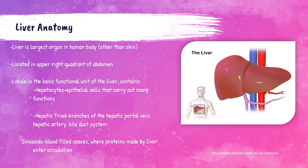The lobule contains hepatocytes, which are epithelial cells in the liver that carry out many functions. The lobule also contains the hepatic triad, which are the branches of the hepatic portal vein, hepatic artery, and the bile duct system. And lastly, it also has sinusoids, which are spaces in the liver filled with blood. This is where proteins are synthesized within the liver and can leave that organ and enter the body's circulation.